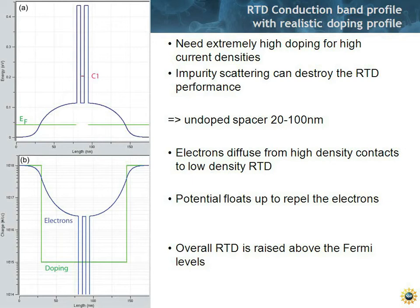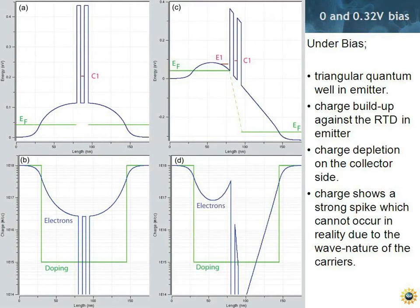So now the question is, what happens if you apply a voltage? So let's apply a voltage. So under bias, what you have is the potential drops, mostly in the collector, but a little bit also in the emitter. And if the potential drops a little bit in the emitter, you sort of form a triangular well, right here at this notch.